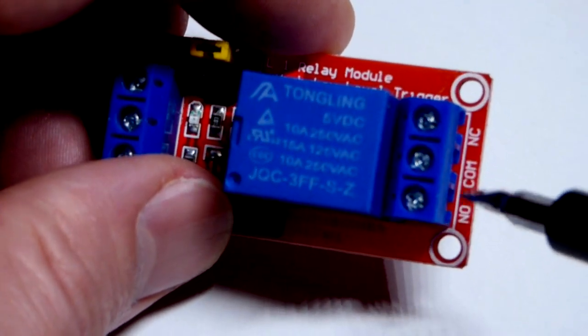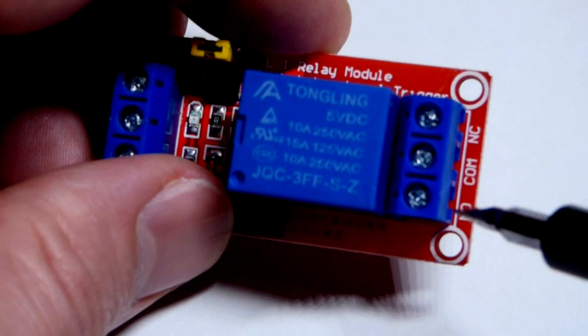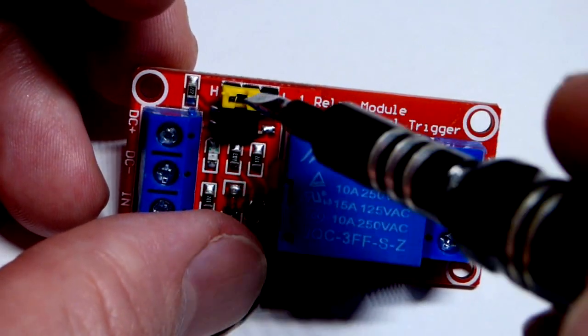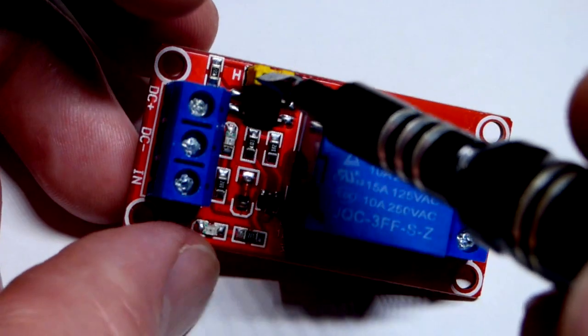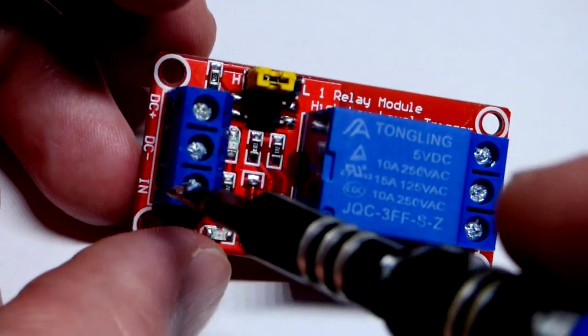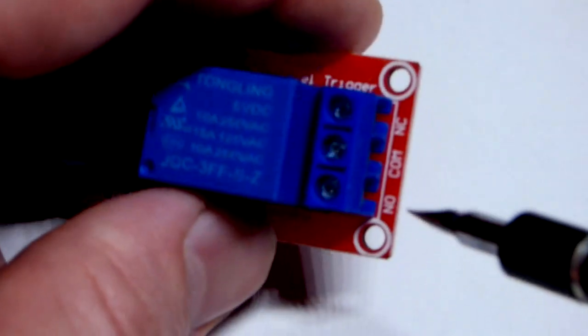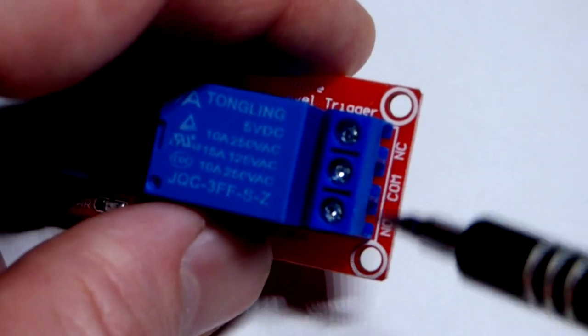Here is the normally open - that means if you connect a circuit there it will be off. If you have the module set to high and give it a high input, basically if you give it a 5 volt input there, then it will close. That's how you switch it.